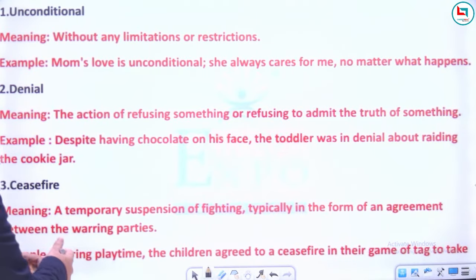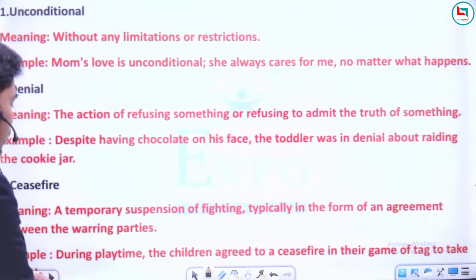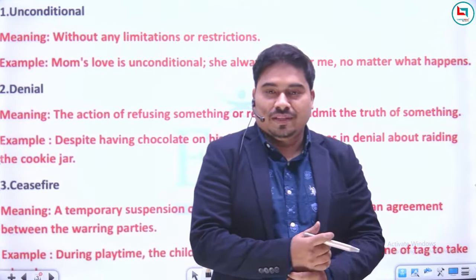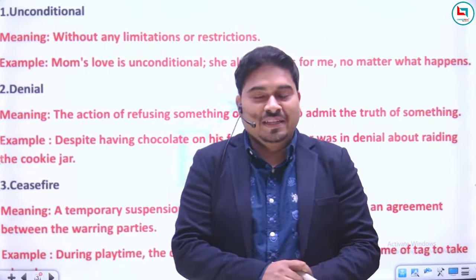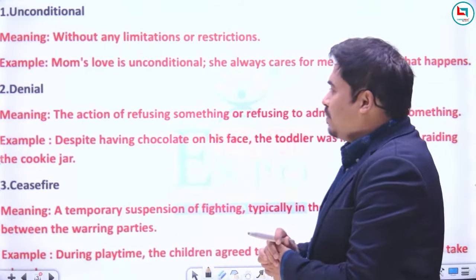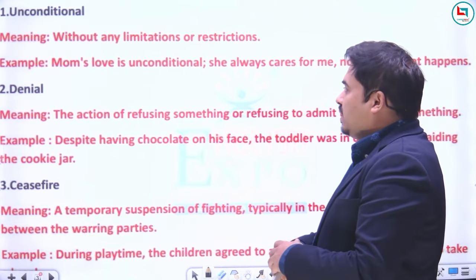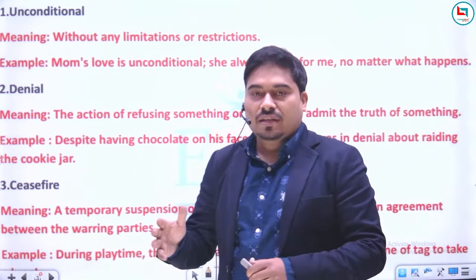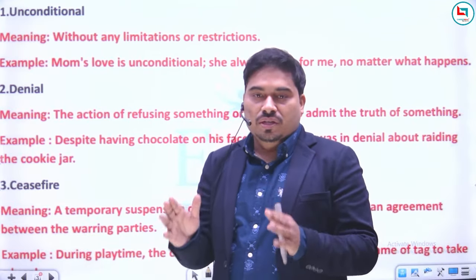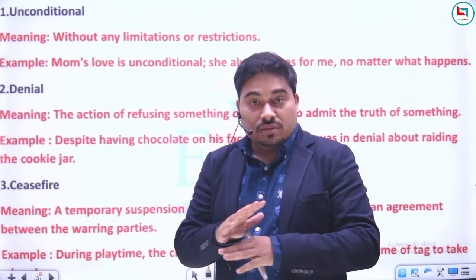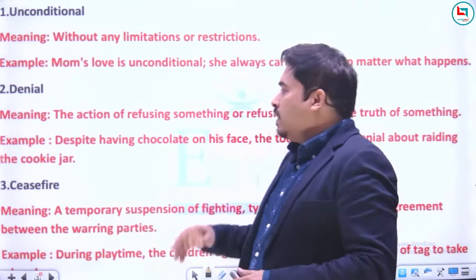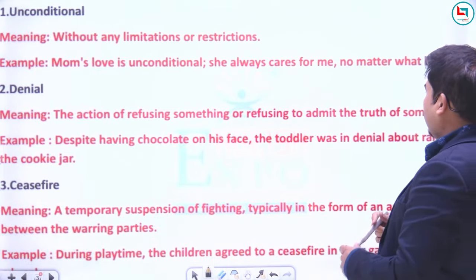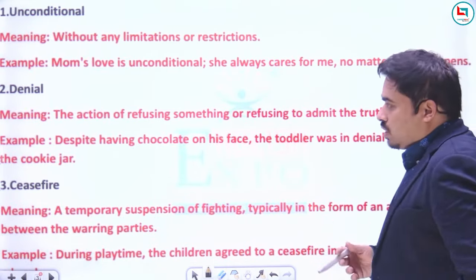Pehla shabd hai 'unconditional'. Aasan sa shabd hai, koi mushkil nahi. Bahut baar unconditional love ki baat aap suntey ho. Yeh aaj ki editorial mein bhi hai. The meaning is 'without any limitations or restrictions' — yani jahan pe koi limitation, koi restriction, koi shart na ho. Example: Mom's love is unconditional, she always cares for me no matter what happens.